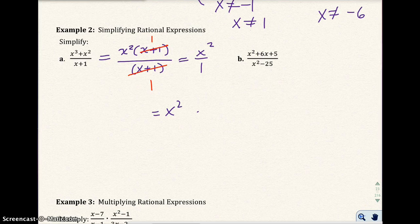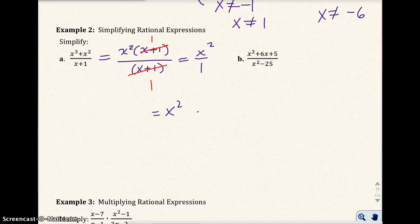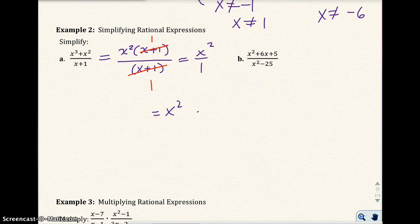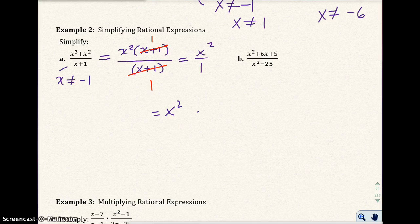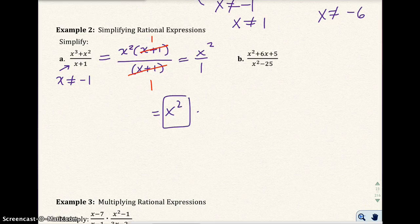Now, in the beginning of that problem, we want to make sure that we go ahead and state our restrictions, I call them restrictions, or what should be excluded from the domain, and x cannot be negative 1 in this expression. So the answer is x squared, but we know x cannot be negative 1.